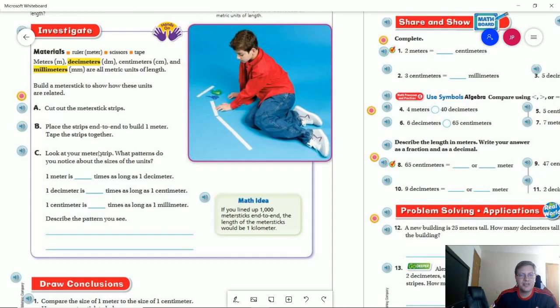To start with, we are going to say that a meter is 10 times longer than one decimeter. A decimeter is 10 times as long as one centimeter. And a centimeter is 10 times as long as one millimeter.